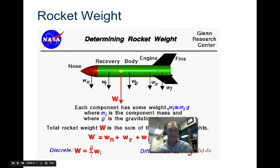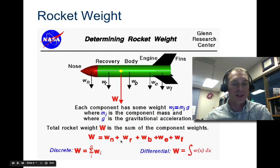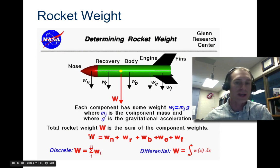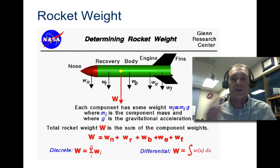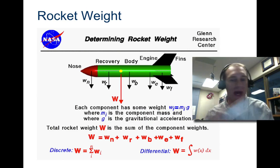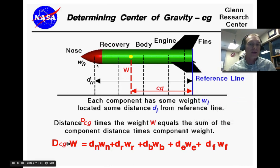You'll want to pause this for determining rocket weight. Add the weight of the nose, plus the weight of the recovery system, and all other components to get the total weight. That's straightforward — just add them all up. I'm not talking about center of gravity or center of mass yet, just total weight.